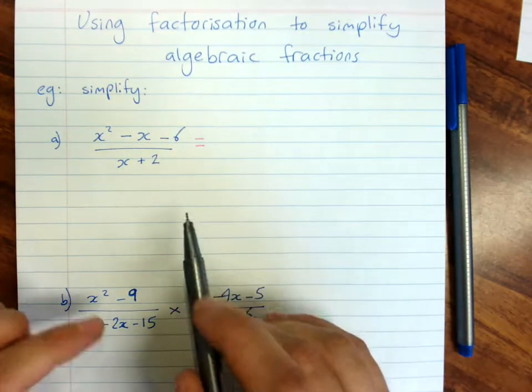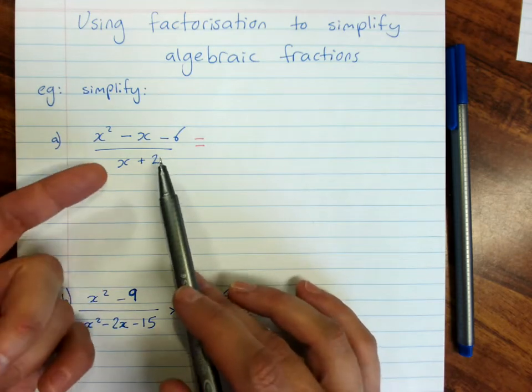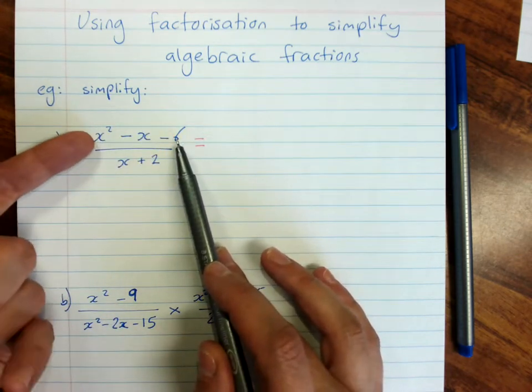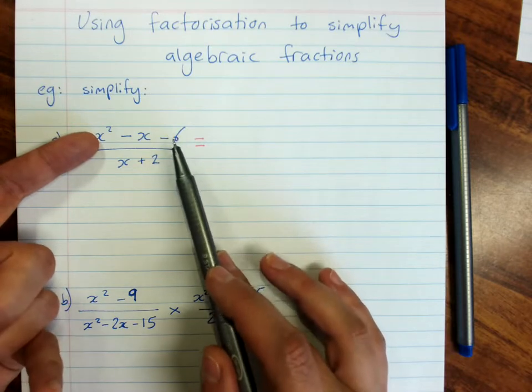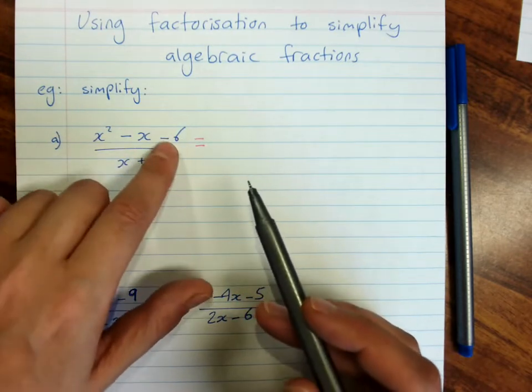Often if you don't see a way of simplifying an algebraic fraction, especially if you see an expression that can be factorized, factorizing will find you a common factor that you can then cancel. So we look for factors.